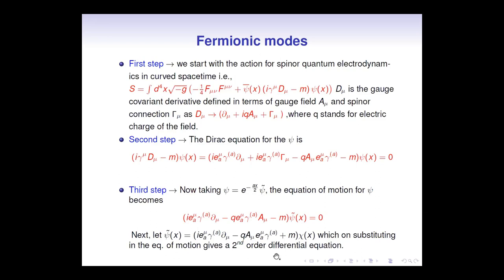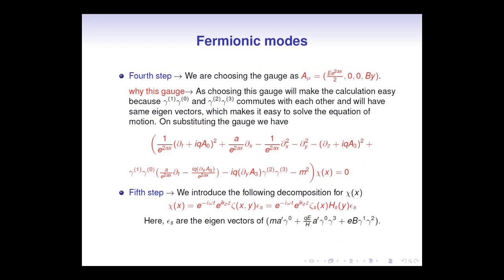Next, we substituted psi-tilde as i e^mu_a gamma^i (del_mu minus q A_mu) e^mu_a gamma^i plus m, times chi, where e^mu_a are the tetrads, so that our equation of motion becomes a second-order equation that is easier to solve. In the fourth step, we chose the gauge field ansatz as A_mu equal to e^(2ax/2) times (0, 0, B/A), which gives us a constant non-zero electric field and magnetic field. This gauge was chosen because it makes the gamma-matrix products gamma^1 gamma^0 and gamma^2 gamma^3 appear, and since these two commute with each other, they share the same eigenvectors, making the calculation tractable.